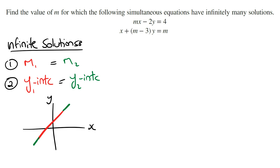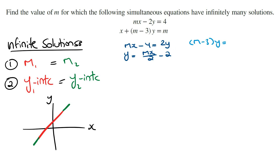One way to approach this question is to first make y the subject for each of the equations. Making y the subject for the first equation, we get mx minus 4 is equal to 2y, so y is equal to mx divided by 2 minus 4 divided by 2, which is 2. For the second equation, solving for y, we get m minus 3y is equal to m minus x, and then dividing by m minus 3, y is equal to m divided by (m minus 3) minus x divided by (m minus 3).